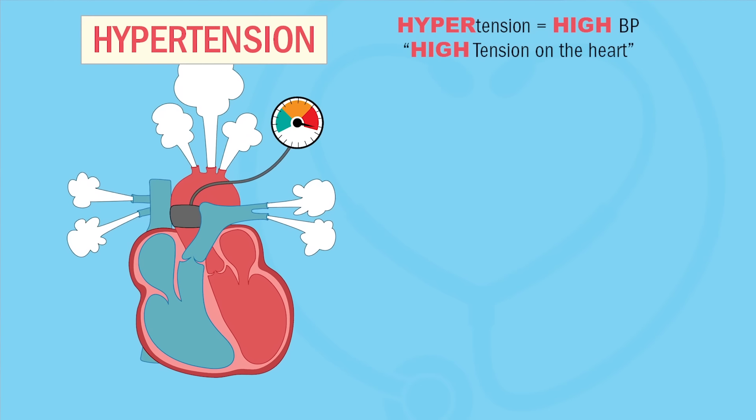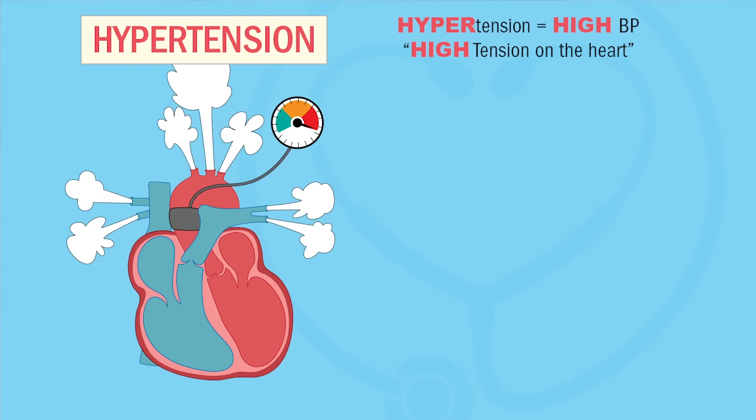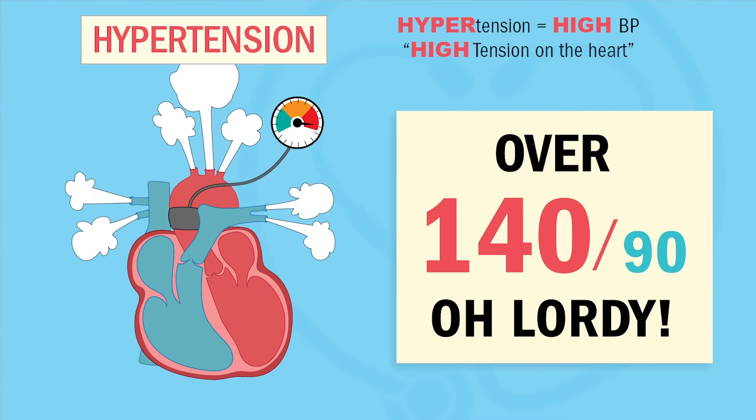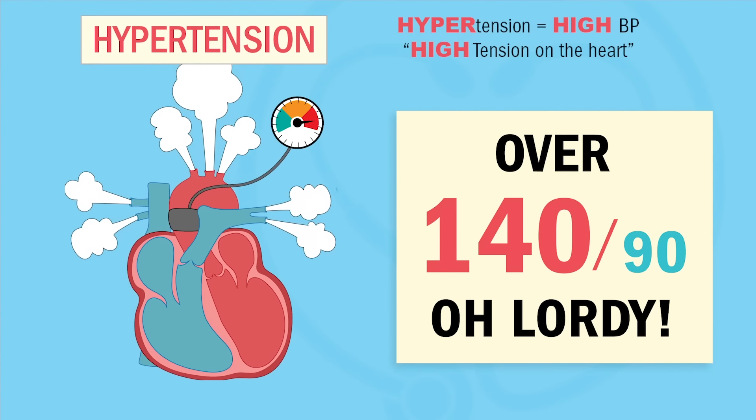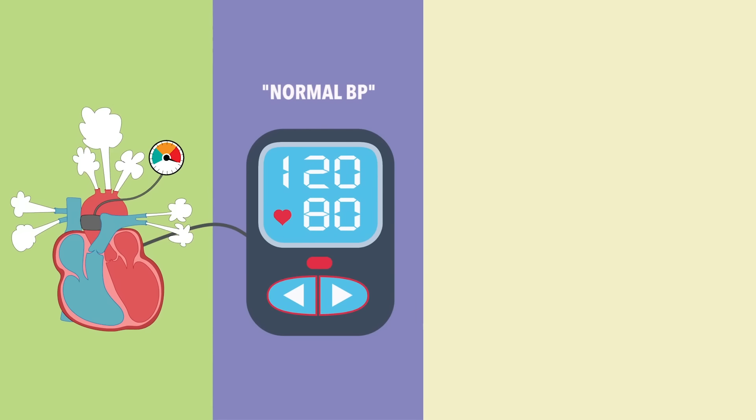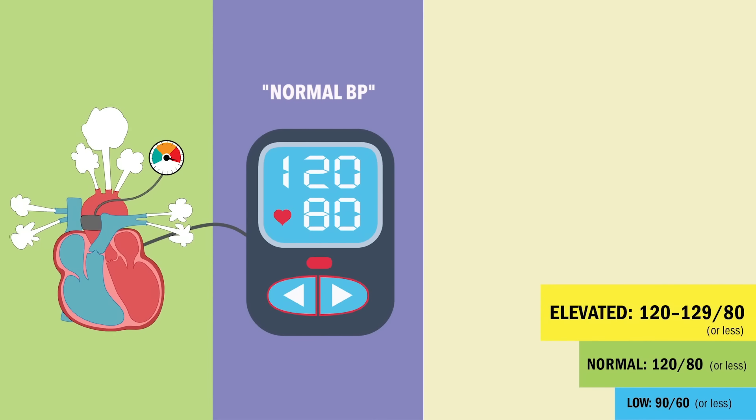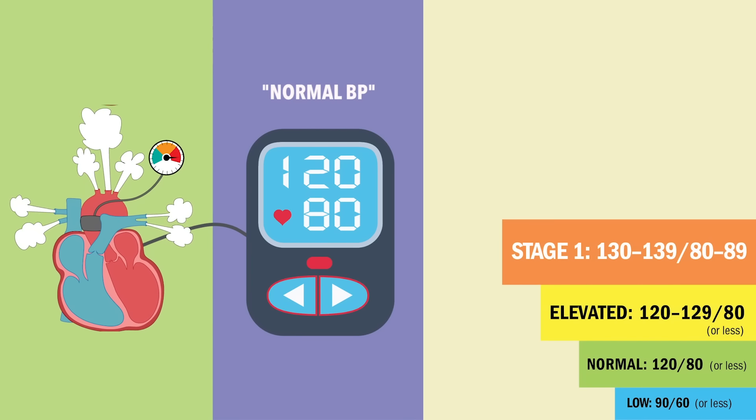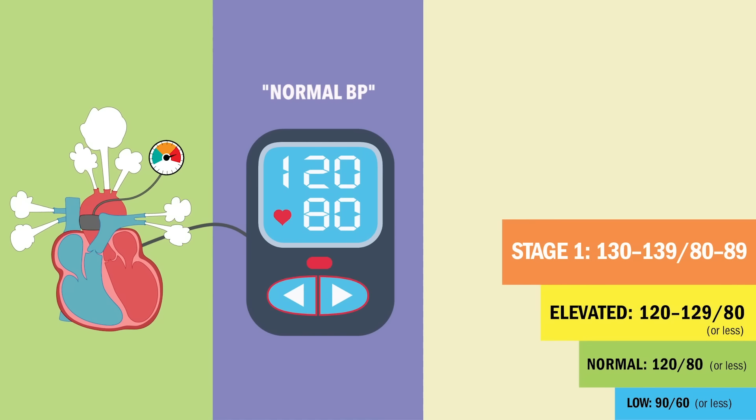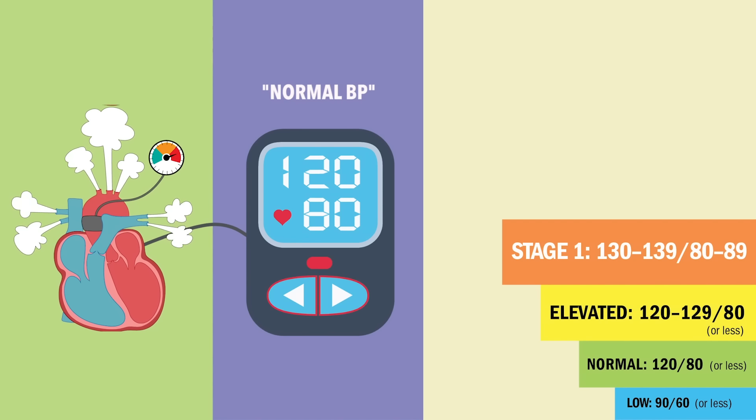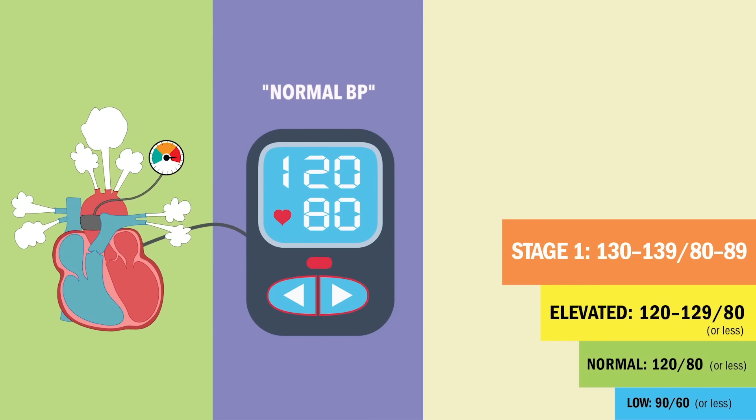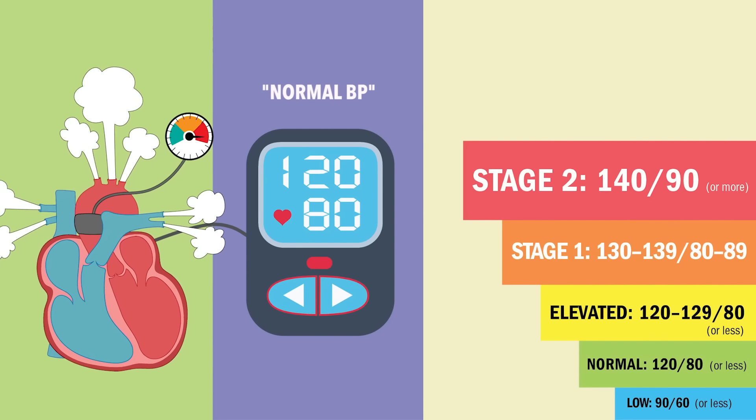Now in hypertension, we have high tension on the heart and blood vessels. So remember by saying, anything over 140, the heart says oh lordy. As far as your numbers, elevated BP starts at 120 to 129 over 80. Stage 1 hypertension is 130 to 139, and diastolic is 80 to 89. We start taking major note when it gets to stage 2, this 140 over 90.